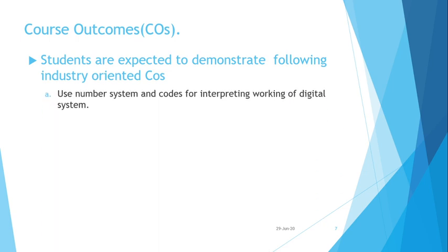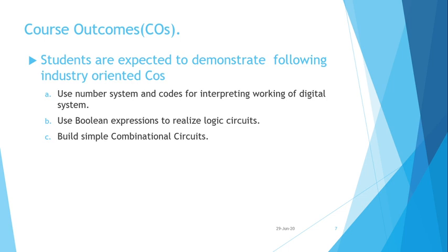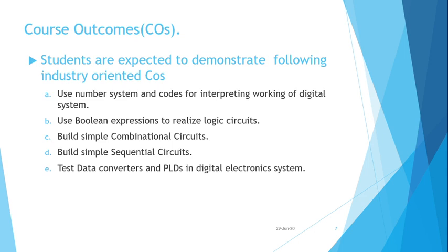The course outcomes are: use number systems and codes for interpreting the working of digital systems; use Boolean expressions to realize logic gates; build simple combinational circuits; build simple sequential circuits; and test data converters and ICs in digital electronics systems. At the end of this course, you are supposed to demonstrate these outcomes.